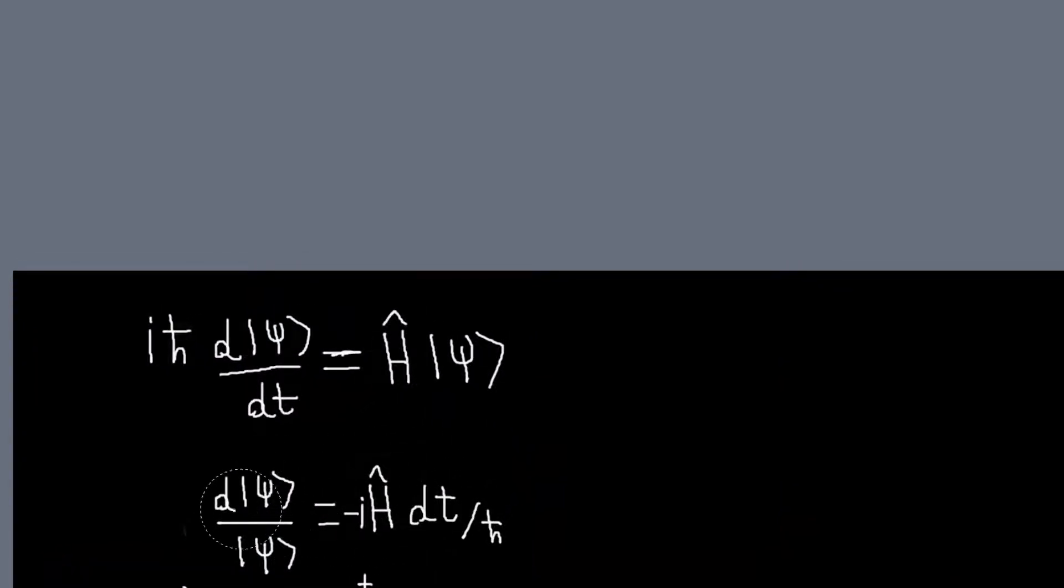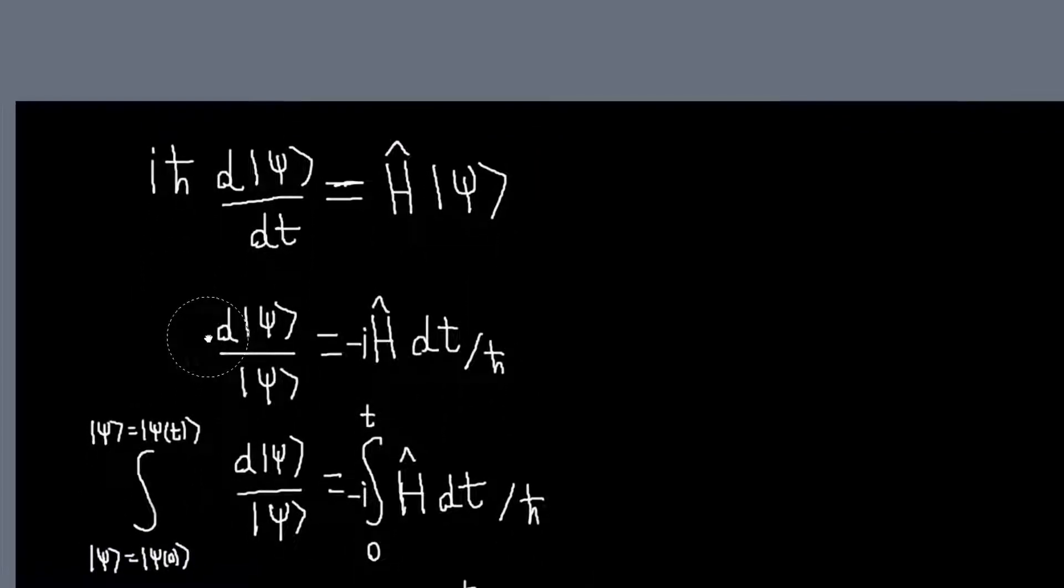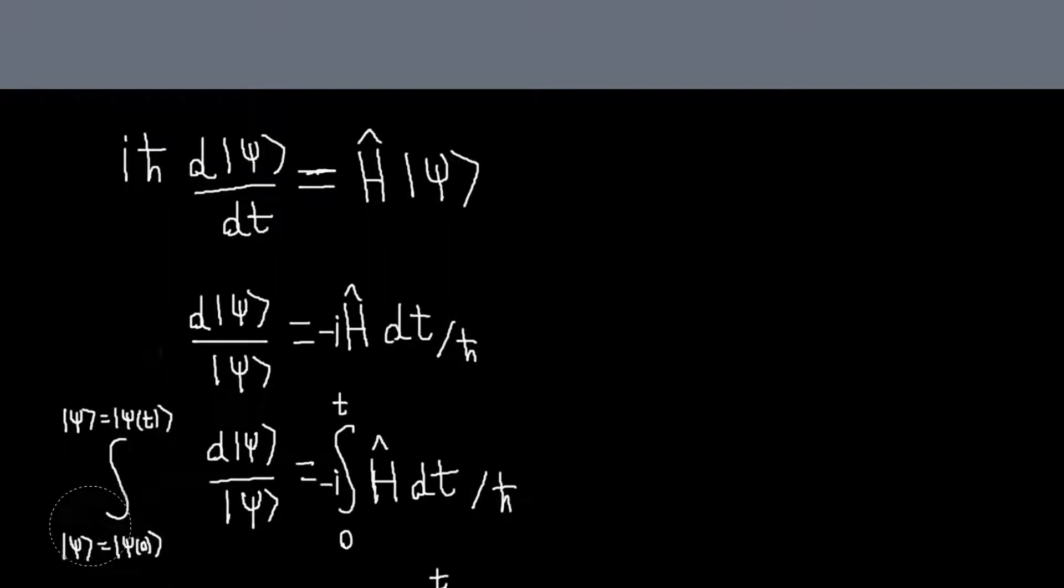And then I just do what I would normally do. If this were some function, I'm going to integrate both sides. So I'll integrate this side from psi equals psi of 0 to psi equals psi of t. And integrate the right side from 0 to t.